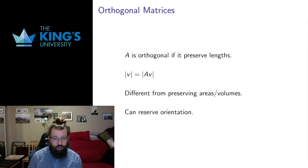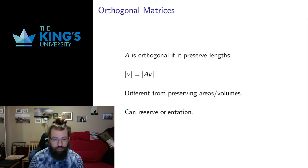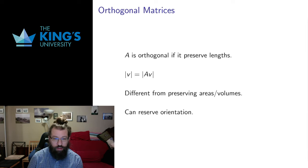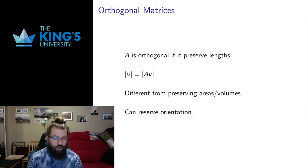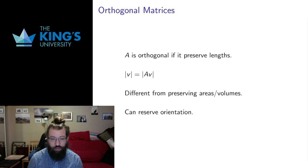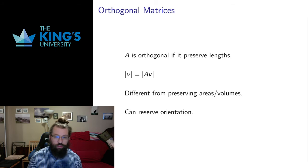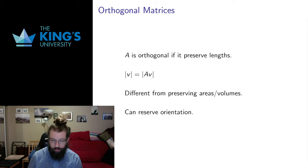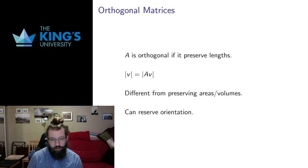The new matrices I want to define are called orthogonal matrices. I apologize a little for this term because we already have the notion of orthogonal vectors — vectors that are perpendicular to each other. So an orthogonal matrix is not perpendicular to anything; it's just a property, a type of matrix. A matrix is orthogonal if it preserves lengths. This is a little different from preserving areas and volumes; they're connected, but not exactly the same thing.